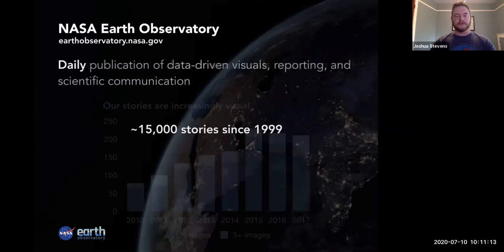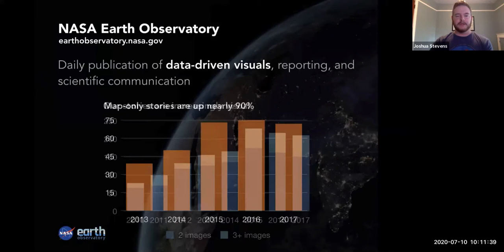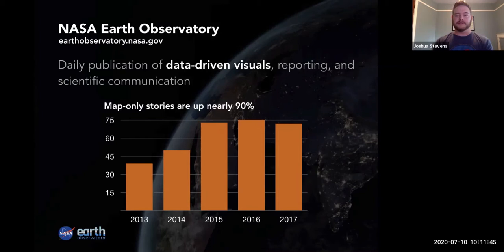What's really neat is that over time the stories coming out are increasingly data driven — data and analysis have played a really strong role in what we're putting out. What started out as sort of the image of the day has now become the images of the day, as each article includes two, three or even more images. The visuals are increasingly map-only, bridging the gap between remote sensing and GI science.